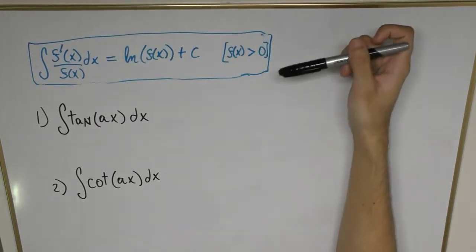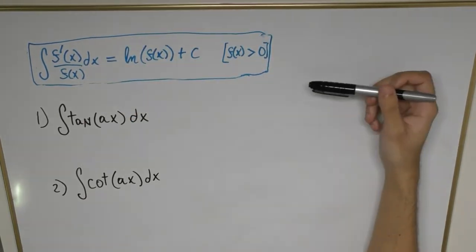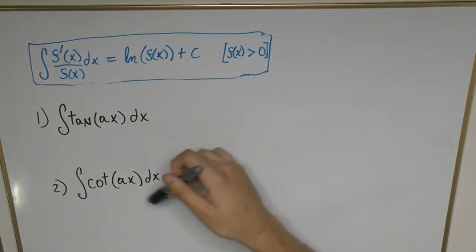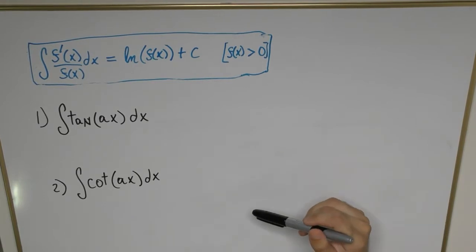same formula we've been looking at, which results in the natural log of the denominator of a rational function, to the functions tangent of ax and cotangent of ax, where a is an arbitrary constant.